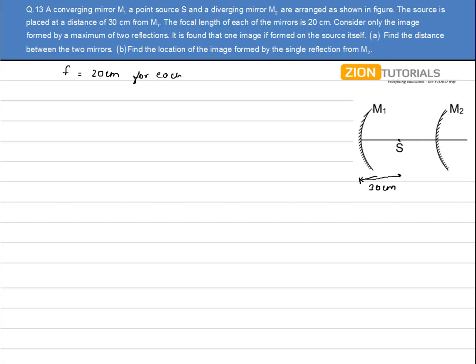First reflection will take place from this mirror. So an image of this object will be formed somewhere over here, because it is written that the image is formed on the source itself. Now, let's say if the image formed by this mirror will be somewhere over here, then this mirror will form the final image somewhere over here, and that won't be coinciding with the source. Fine.